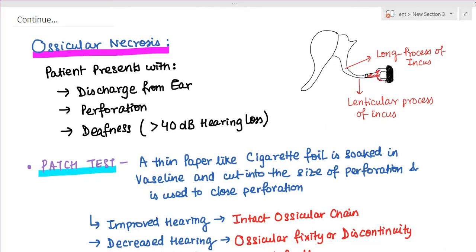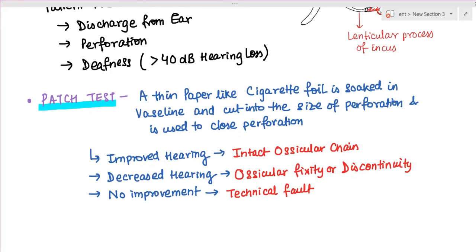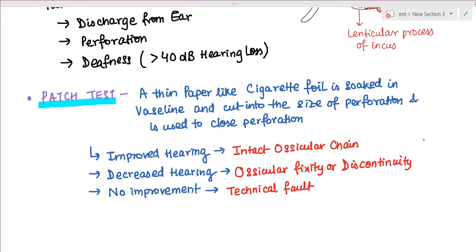You can do a test called a patch test to see whether there is ossicular necrosis or the ossicles are intact. We take a thin paper like cigarette foil, soak it in Vaseline, cut it to the size of perforation, and use it to close the perforation. Then we check through audiogram.